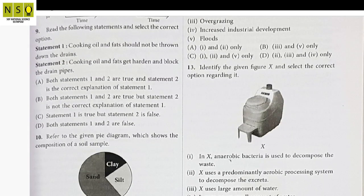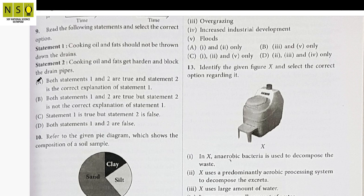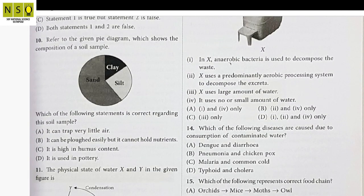Question 9: Read the following statements and select the correct option. Statement 1 says cooking oil and fat should not be thrown down the drains. Statement 2 says cooking oil and fats get hardened and block the drain pipes. We know that if we throw cooking oils and fats into the drain, they join together and become very hard, blocking the drain pipes. Both statements are true and Statement 2 is the correct explanation of Statement 1.